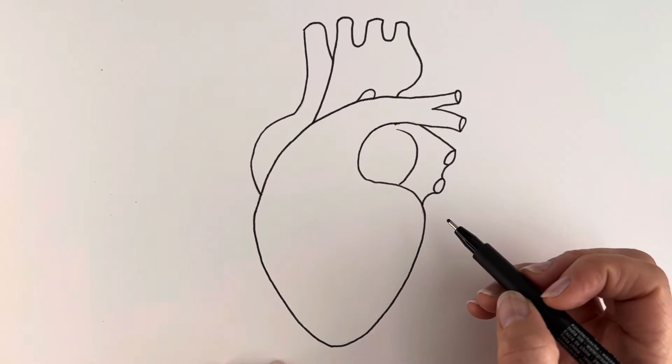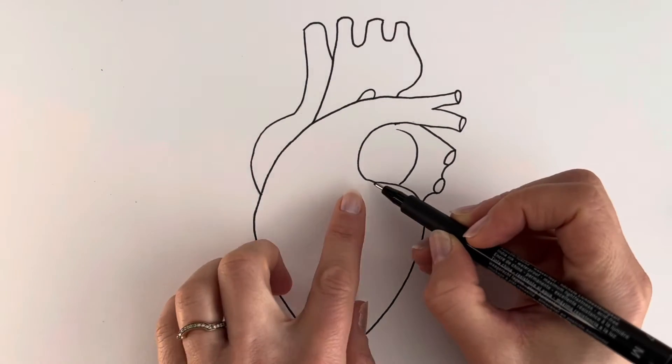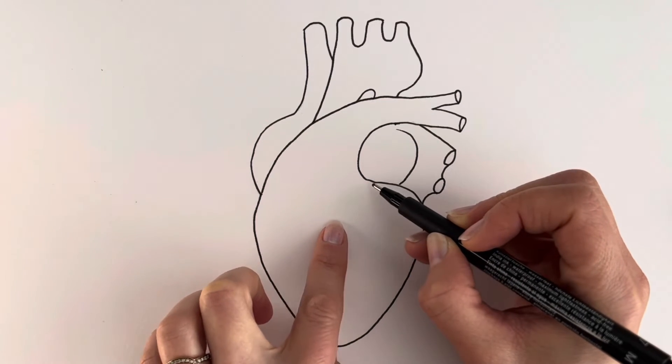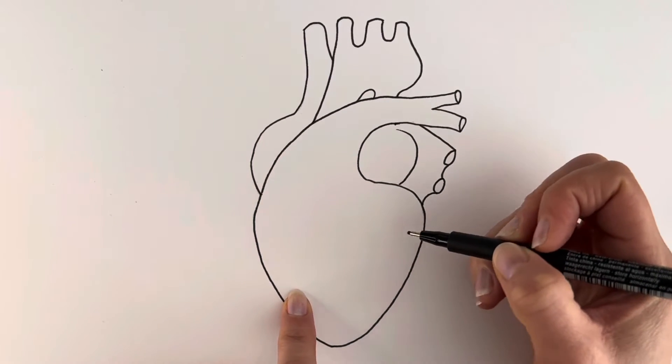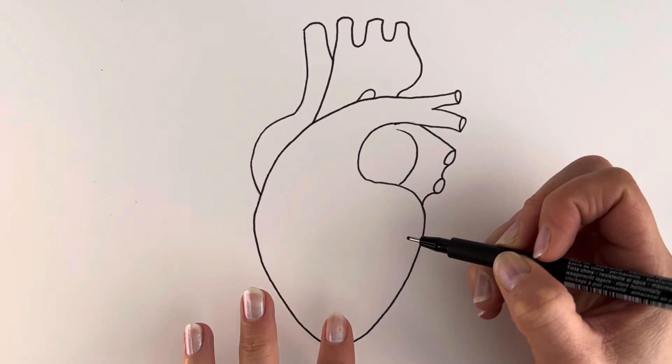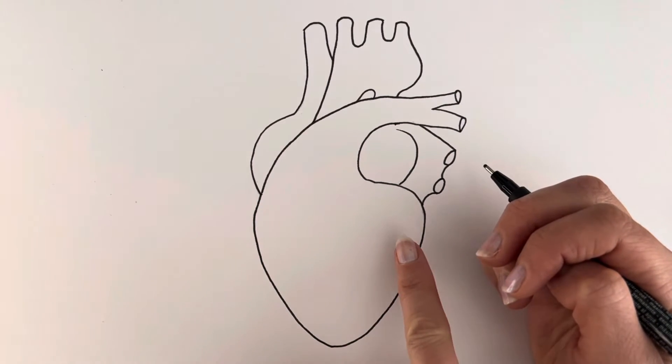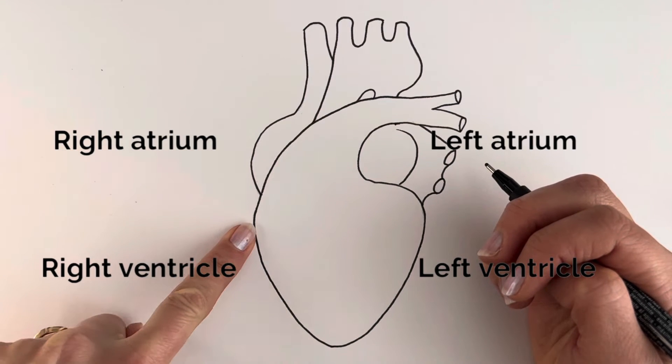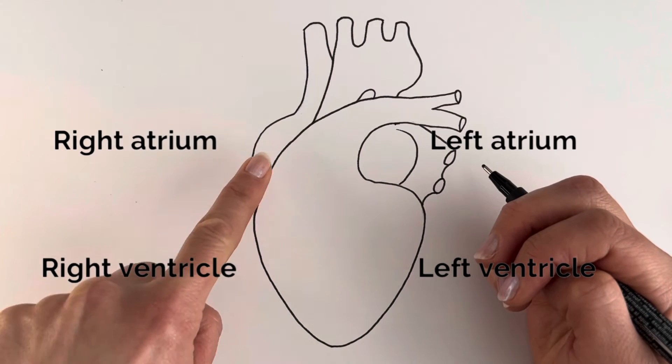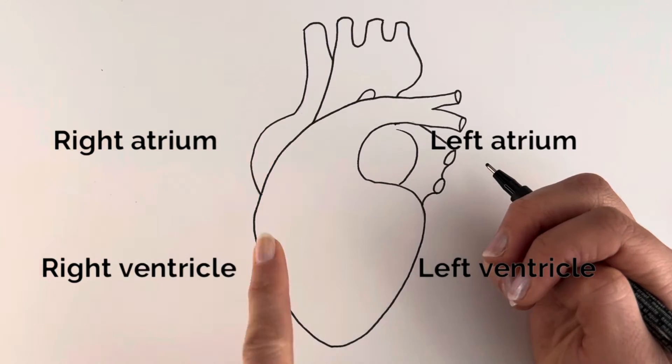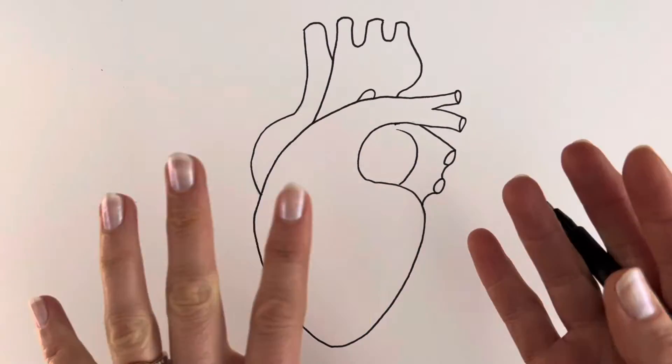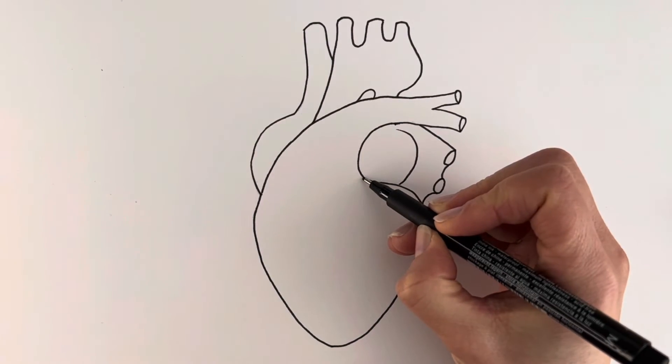Now we're going to add some detail and we're going to start off with the left coronary artery. It's going to come down here. It's a bit confusing because in biological diagrams we swap the left and the right because this is belonging to the body. So this is actually the left ventricle and this one here is the right ventricle. That's the right atrium and this one's the left atrium. So it's all topsy-turvy. Anyway, let's get on with drawing.